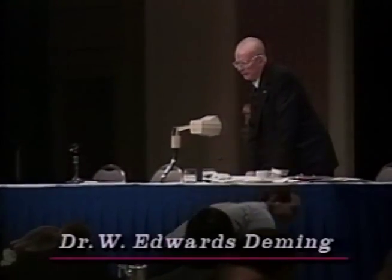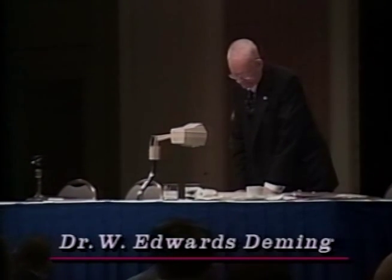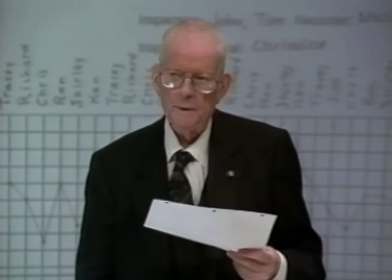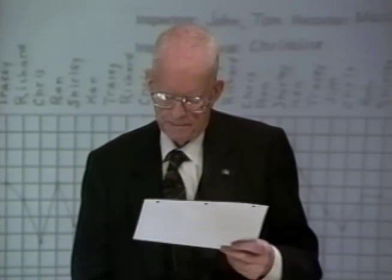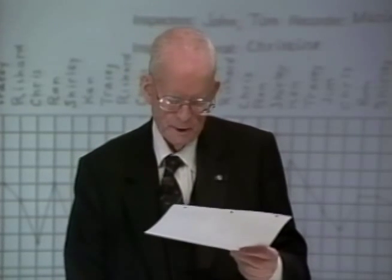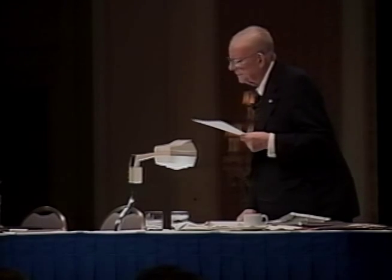Now that we have our chart in hand from the Red Beads, we can make further studies. Interpretation of chart: the process exhibits good statistical control. What do we mean by that? That the points — the work done by our willing workers — stayed within the control limits, no point outside. This conclusion is based on intimate knowledge of the procedures prescribed and followed by the six willing workers, as well as on study of the chart.